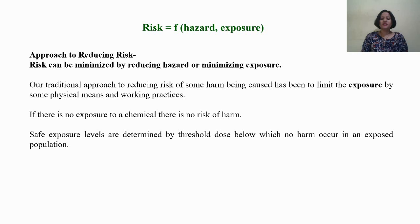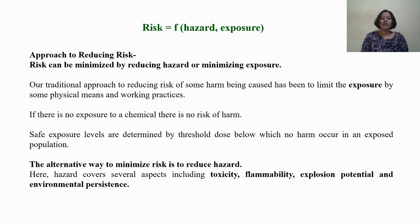Traditionally, risk is reduced by limiting exposure by some physical or chemical means. If there is no exposure to a chemical, there is no risk. Safe exposure levels are determined by thresholds below which no harm will occur to an exposed population. The other way to minimize risk is to reduce hazard, which covers several aspects such as toxicity, flammability, explosion potential, and environmental persistence.